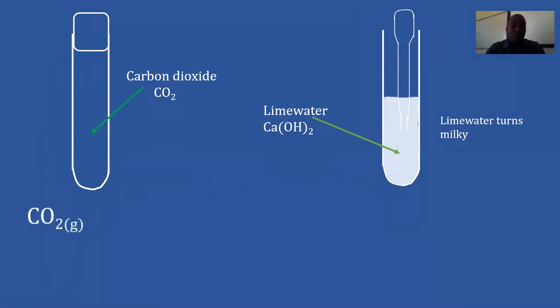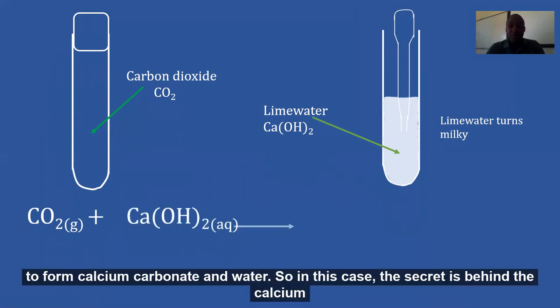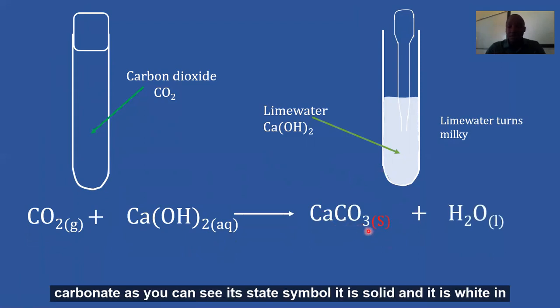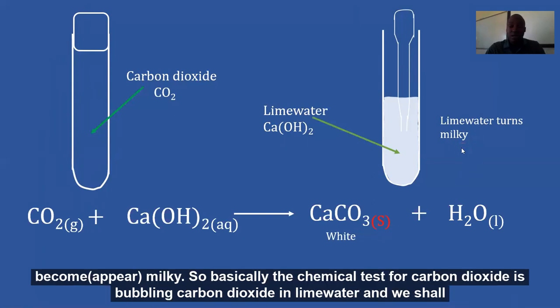So in terms of equation, we shall have carbon dioxide reacting with calcium hydroxide aqueous. So in this case, the secret is behind the calcium carbonate. As you can see, its state symbol, it is solid and it is white in color. It's this calcium carbonate that actually causes the lime water to become milky.